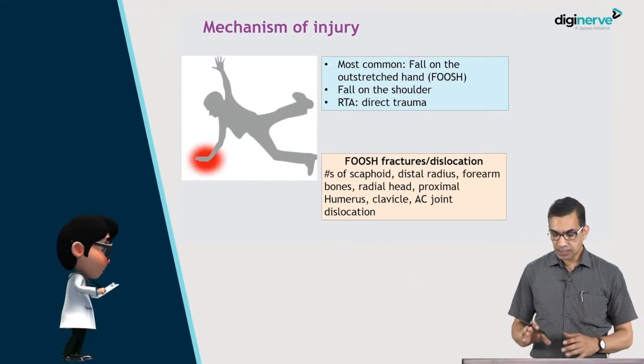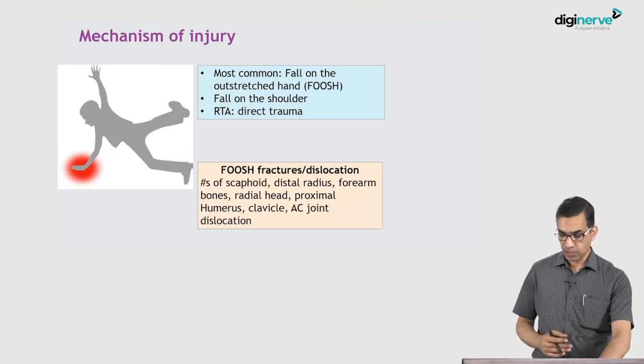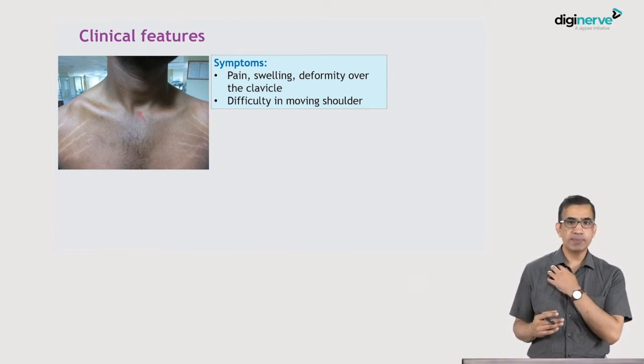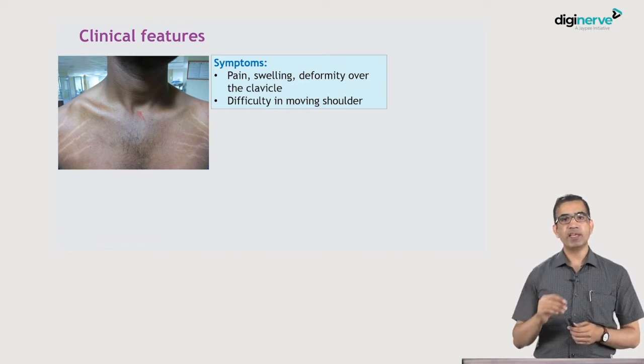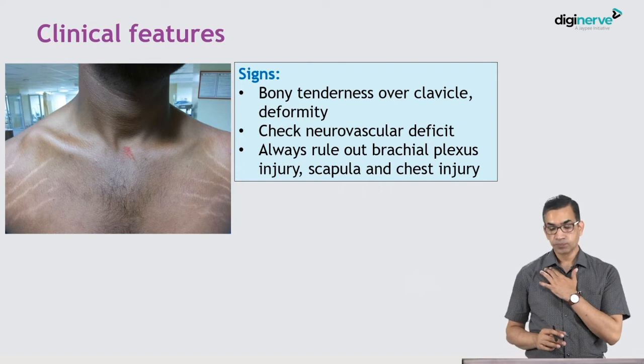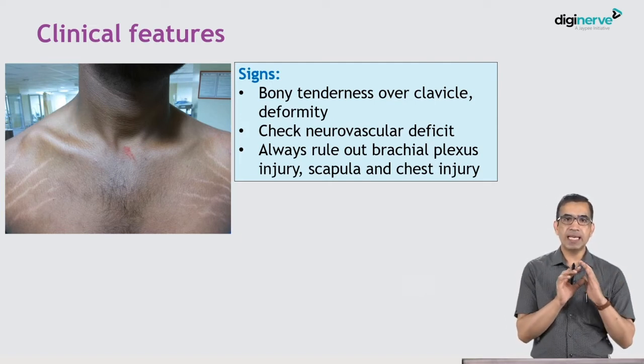Sometimes exams ask to enumerate the fractures which can occur due to fall on the outstretched hand. Clinical features: there will be pain, swelling, sometimes a deformity of the clavicle, and the patient will find it difficult to move the shoulder — they may be able to move the hand and elbow but moving the shoulder will be difficult. On examination there is bony tenderness over the clavicle and you may find a deformity. Always check for neurovascular deficit — check the integrity of the brachial plexus as well as the radial and ulnar arteries.